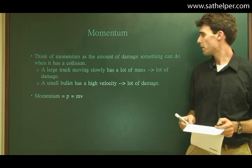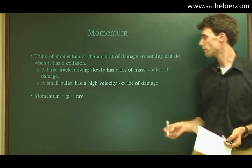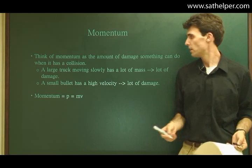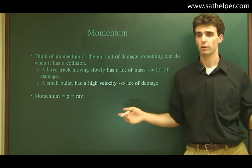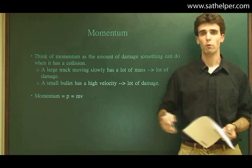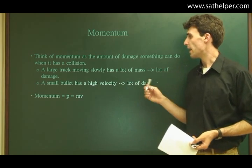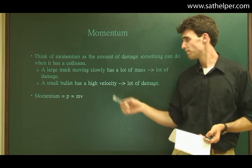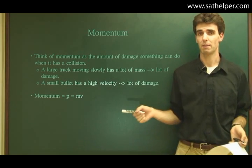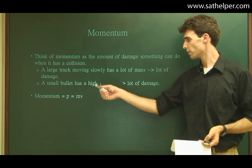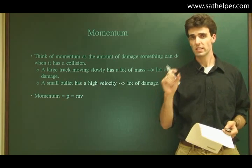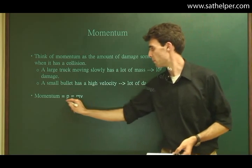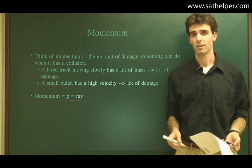So, let's define momentum. Think about it as the amount of damage or force in a collision. It's the amount of damage that we can do when it collapses. Now, a large truck moving slowly, like a huge 1,000 kg truck moving at one meter per second, has a lot of mass, and it can do a lot of damage. Even if it's moving very slowly, it could still push down a wall. A small bullet has a very high velocity and can also do a lot of damage. And now, the large quantity here is the velocity. So, even though it's a small bullet, it's moving very fast and can do a lot of damage. So, we've defined that momentum is equal to mass times velocity.